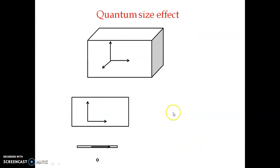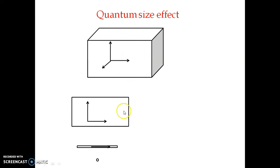The second reason is what we call the quantum size effect. It puts a limit on the motion of the particle, or we can say the motion of the electron. In bulk material, an electron is free to move in any direction — x, y, or z. Now if it is a quantum well, meaning one dimension is reduced to nanoscale, we get a plane structure and the electron can move only in the x and y directions, so the degree of freedom is reduced.